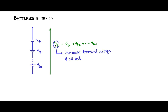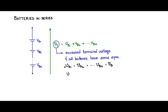Now if all the batteries have the same spec, then vb1 will be equal to vb2 equal to vbn — that is, each battery will have the same voltage. Let us call that one as vb, and vt will be equal to n times vb. So this would be a nice simple relationship. However, the picture is not as nice and simple as it seems.